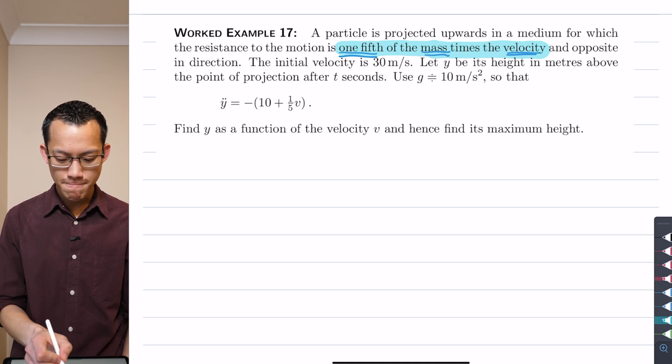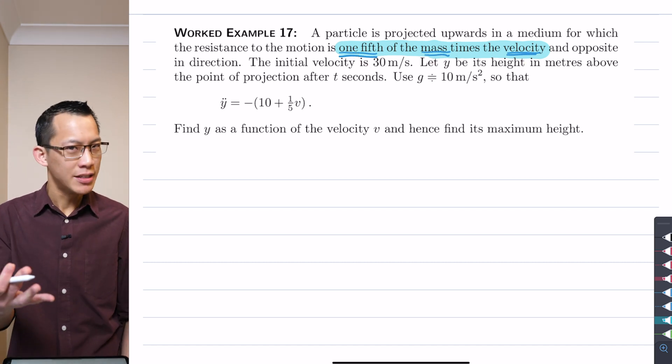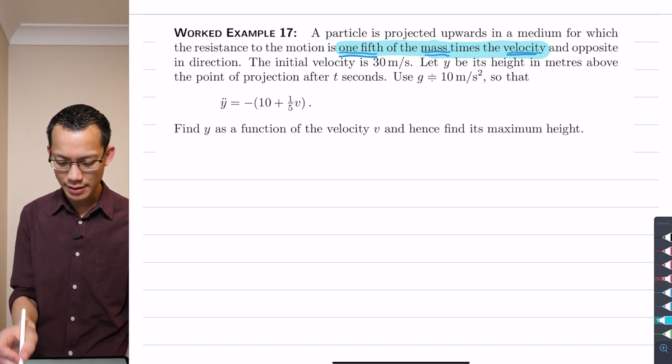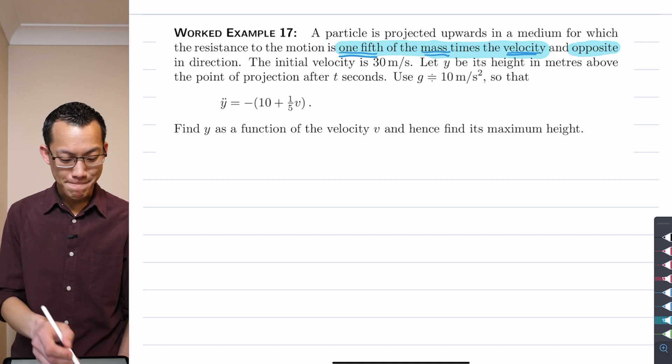So I'm just going to underline that, that's equally important. So this is m and then k and then v and it's resistance, so it's a minus sign that's implied. Opposite in direction, we could highlight that as well, but you don't really need to say that when it's resistance.